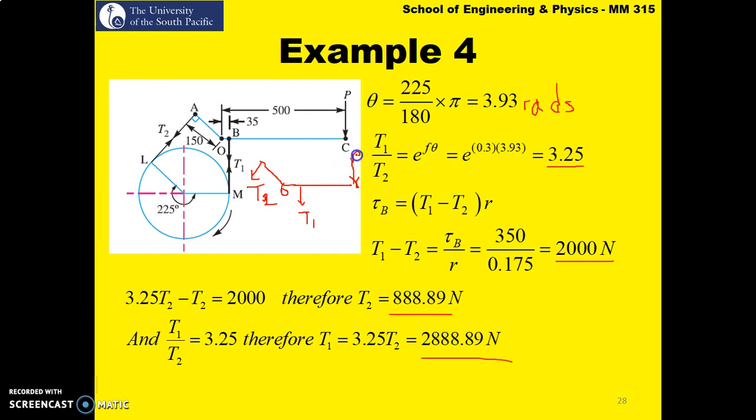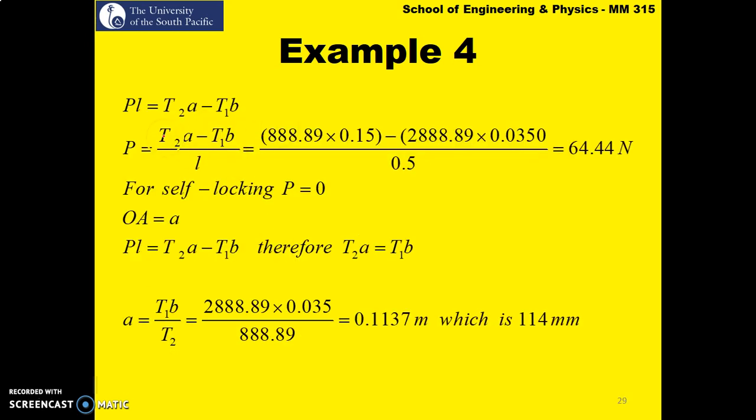So what we do is we can solve for P quite easily now. We can do sum of moments about point O. So T₁ causes a clockwise moment so it's negative. P also causes a moment clockwise so it's a negative value. T₂ will cause a moment about point O in the counterclockwise direction so it's positive. So writing the equation, taking sum of moments, you end up with PL is equal to T₂A minus T₁B.